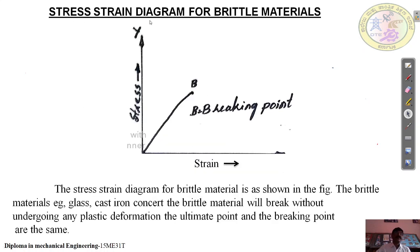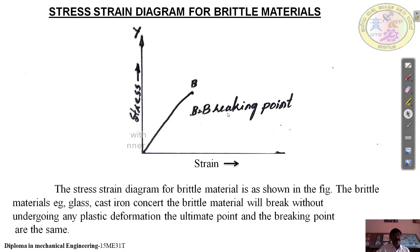Now let us come to the stress-strain diagram for brittle materials. A brittle material is one that fails without any deformation. Some examples of brittle materials are glass, cast iron, concrete, etc. When you conduct a tensile test in a UTM taking a standard specimen, the stress-strain diagram is as shown, where the breaking point and ultimate point are the same.